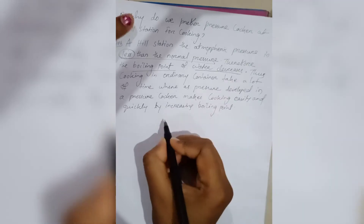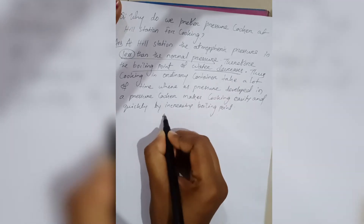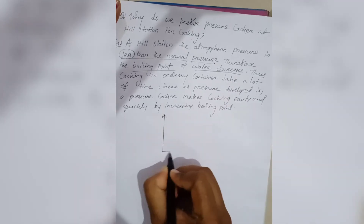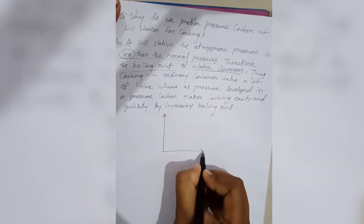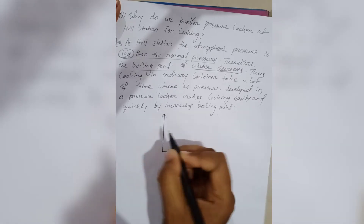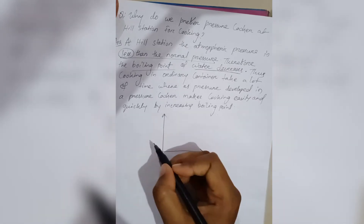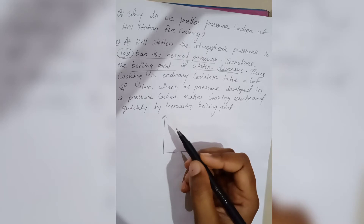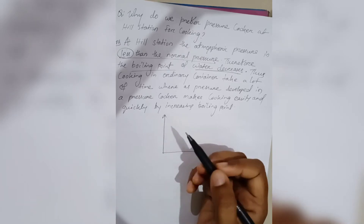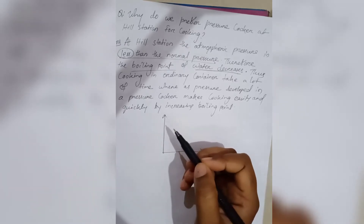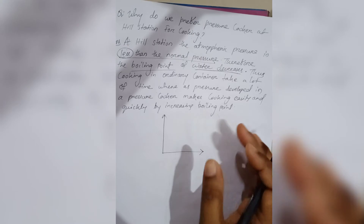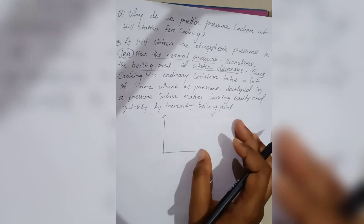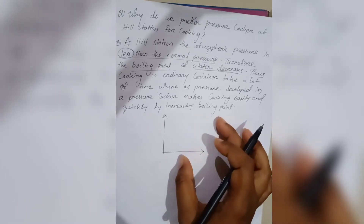We conclude this from the phase diagram of vaporization. The boiling point of water — or melting point — depends on temperature as well as pressure.